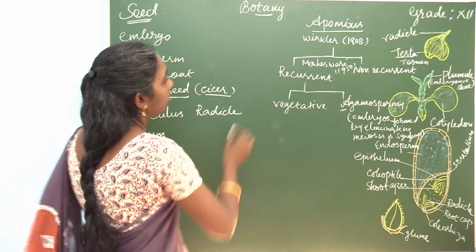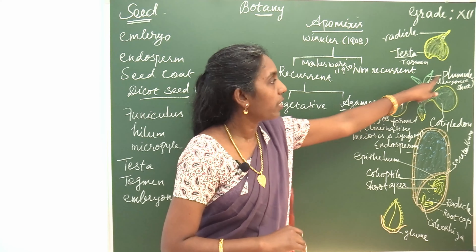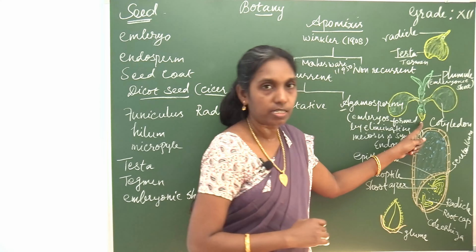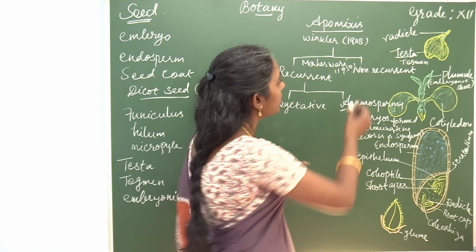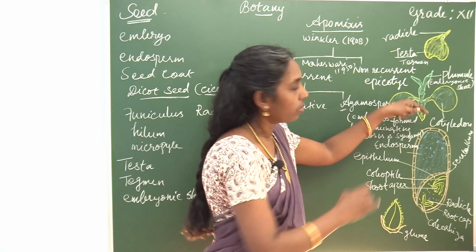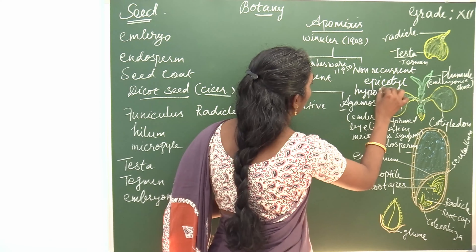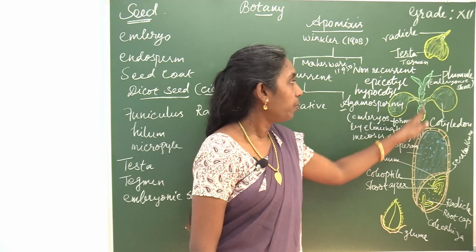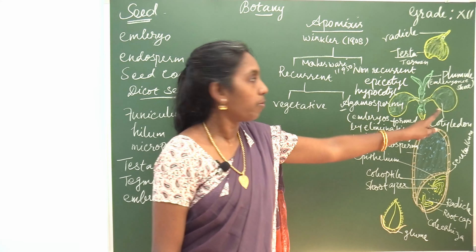The radicle and plumule develop from the embryonal axis. The part above this embryonal axis is known as epicotyl, and the region below or beyond this embryonal axis is called hypocotyl. So there are two regions, epicotyl as well as hypocotyl, observed in the dicot seed. Example: syser.